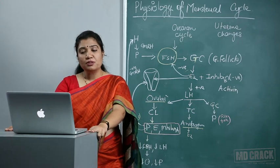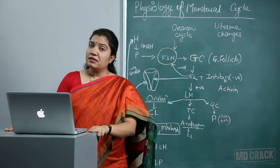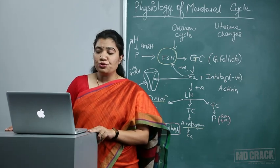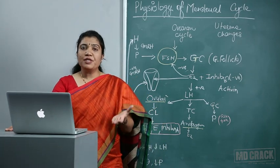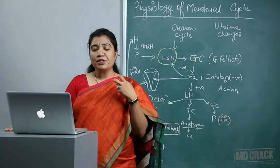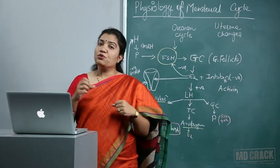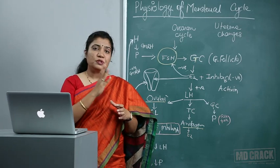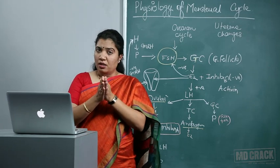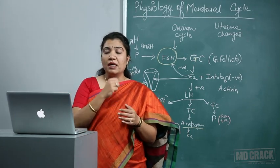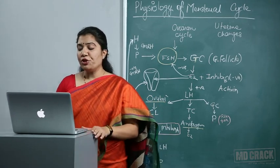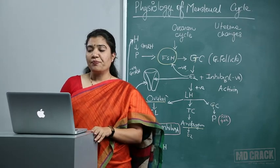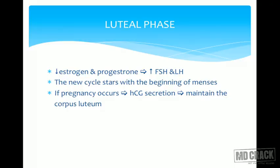The corpus luteum, which secretes progesterone, is sustained by LH. It loses its sensitivity to gonadotrophins and gradually luteolysis occurs. There is decreased production of estrogen and progesterone, and this withdrawal of these two hormones leads to vasoconstriction of the tortuous spiral arterioles in the endometrium, leading to desquamation and shedding of the endometrium as menses.